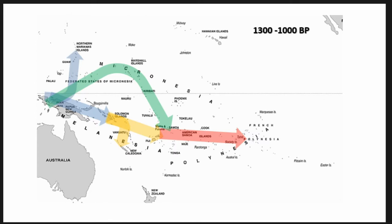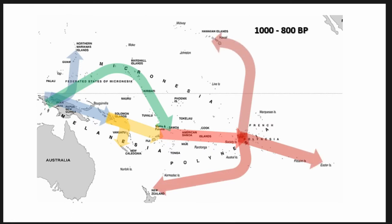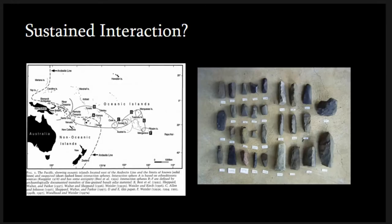They make their way eastward to what we call Central East Polynesia — that's Tahiti, the Society Islands, the Cook Islands, the Marquesas. And from there, they migrate out and settle the margins of the Polynesian Triangle. It's a fascinating story that the ancestral Polynesian people traveled these expansive nautical distances to settle pretty much every inhabitable landmass in the Pacific using a Neolithic technology.